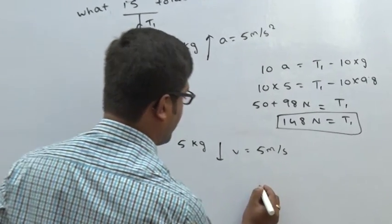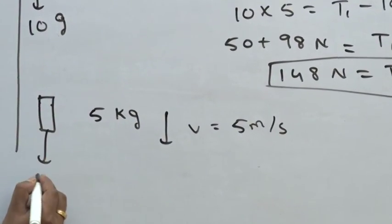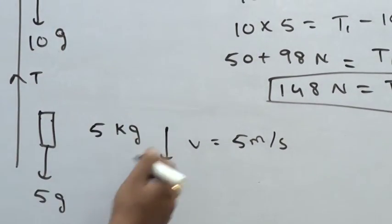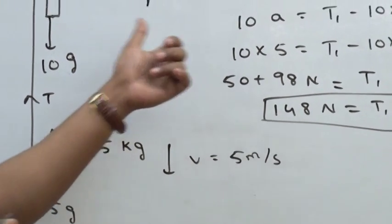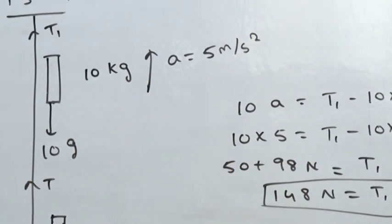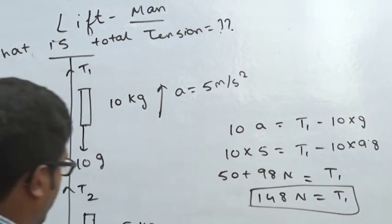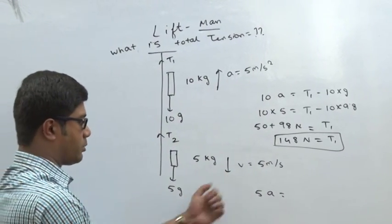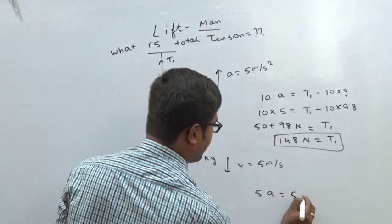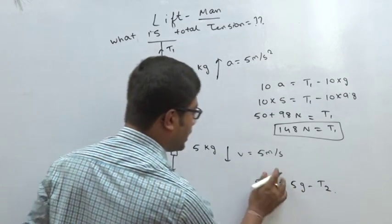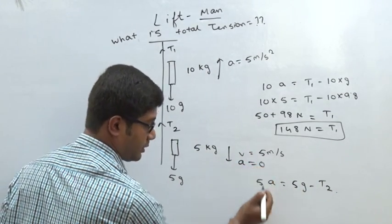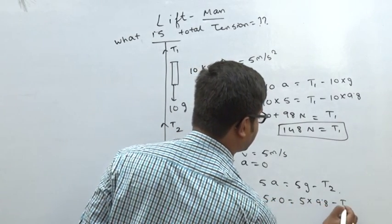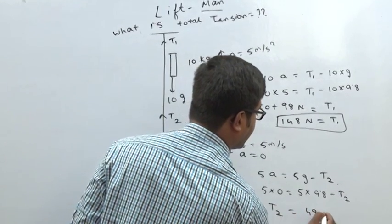For the second man: downward is 5g, upward is T2. Tension is always upward. Uniform velocity means acceleration is 0. So 5 × 0 = 5 × 9.8 minus T2, giving T2 = 49 N.